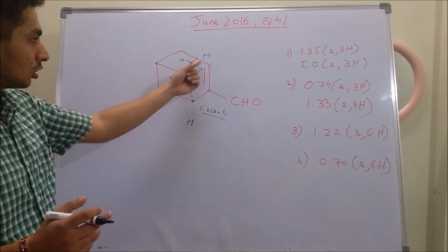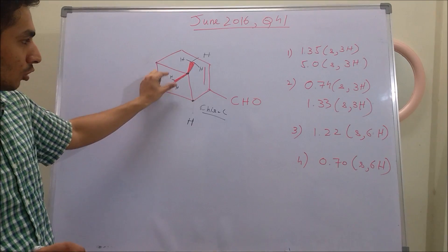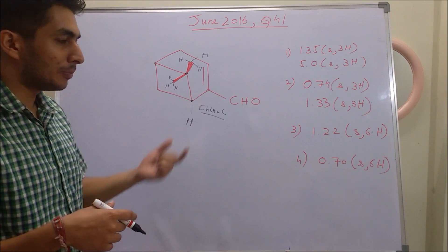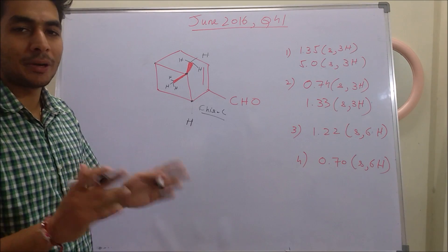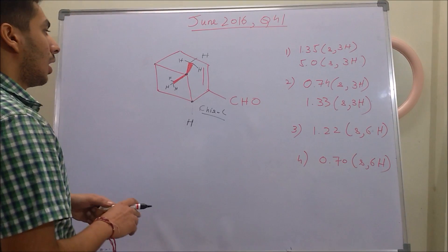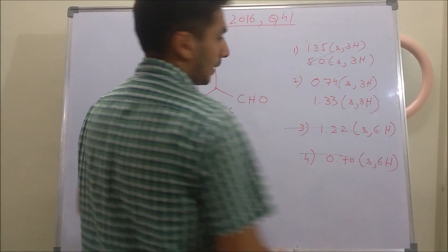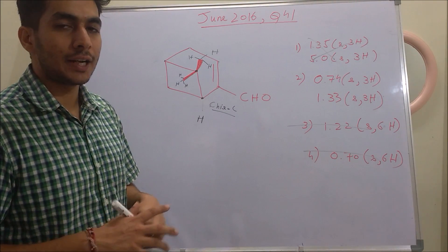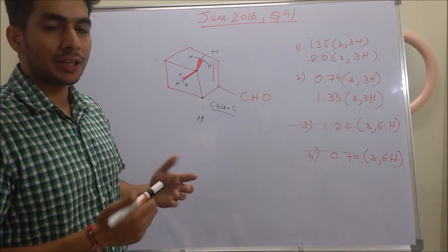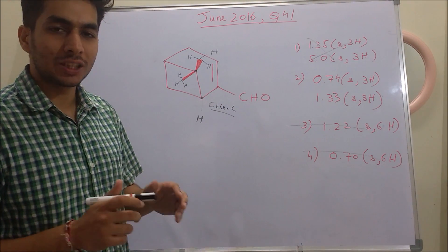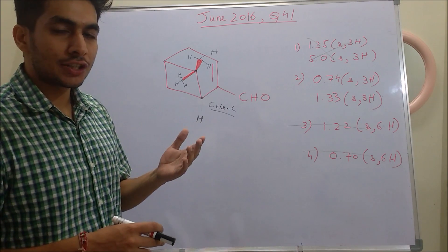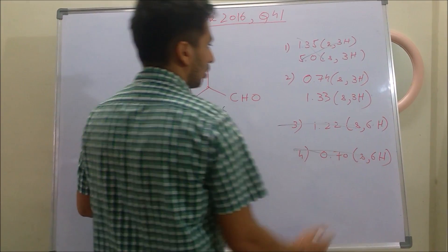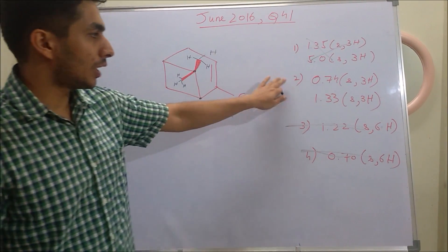So the protons on the two methyl groups are diastereotopic protons. Diastereotopic protons give different chemical shift values, whereas enantiotopic and homotopic protons give the same chemical shift value. Therefore we can cancel out option number three and option number four, and we are left with option number one and two.